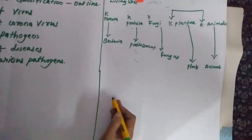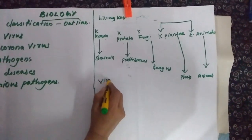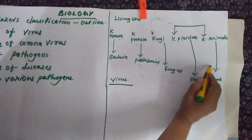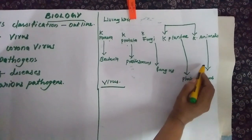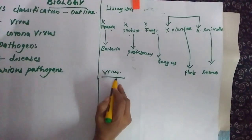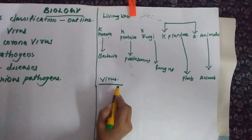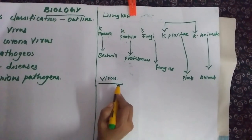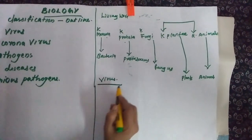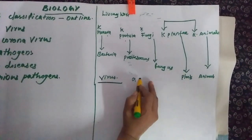What about a virus? Can you see it anywhere — is there any place for it? No. Virus does not have any place in this Five Kingdom Classification because they are acellular.